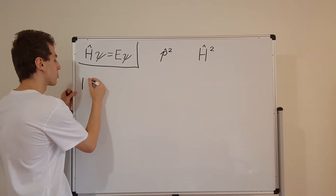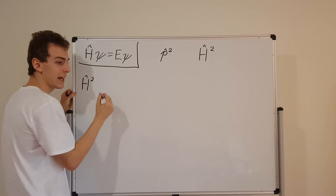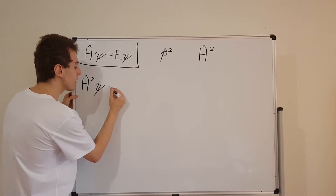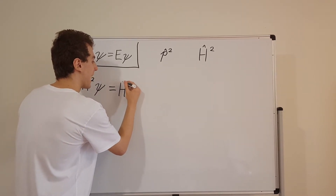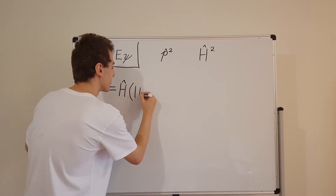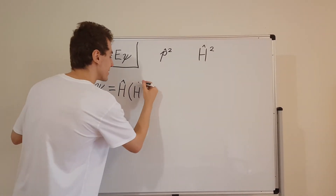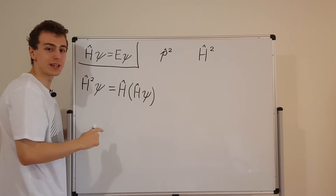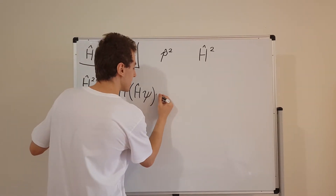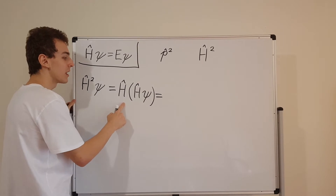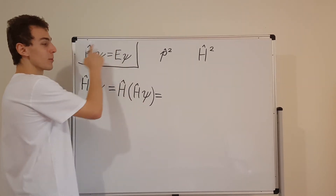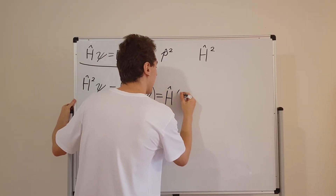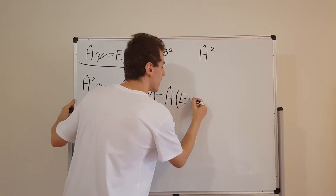So what does that actually mean? Let's do a little derivation. The Hamiltonian operator squared, when that acts on little psi — this is actually equivalent to the Hamiltonian operator acting on something that the Hamiltonian operator has already acted on, because we're doing it twice. This is the same as squaring the Hamiltonian, and this is actually the same as the Hamiltonian operator times E psi. We can get that from the time independent Schrödinger equation.